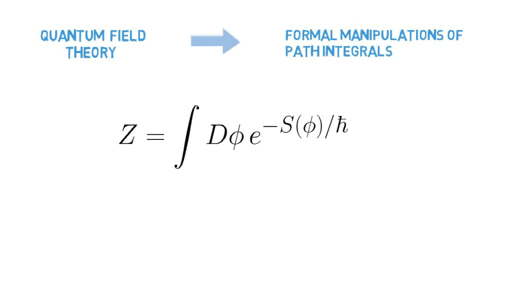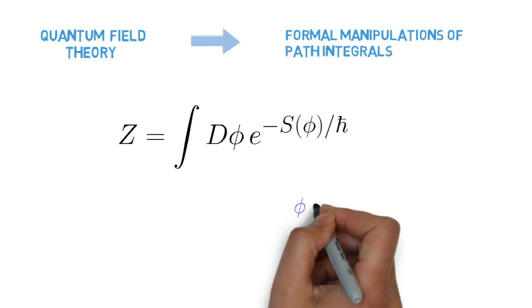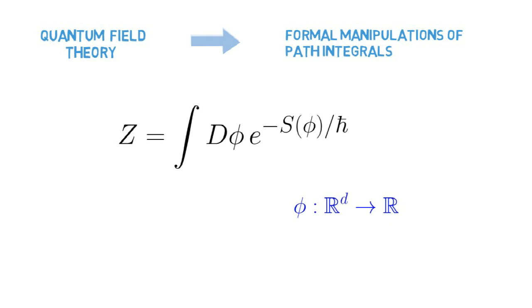One of the most difficult subjects in learning quantum field theory concerns the formal manipulations of path integrals, that is, integrals over an infinite dimensional space of fields. In this example, phi is a scalar field on d-dimensional space, s is an action functional, and h-bar is a coupling constant. The path integral is supposed to be carried out over the space of all fields phi.